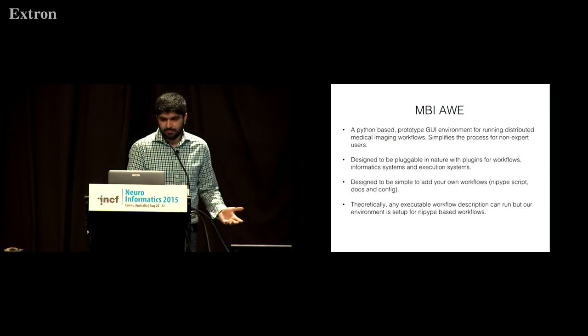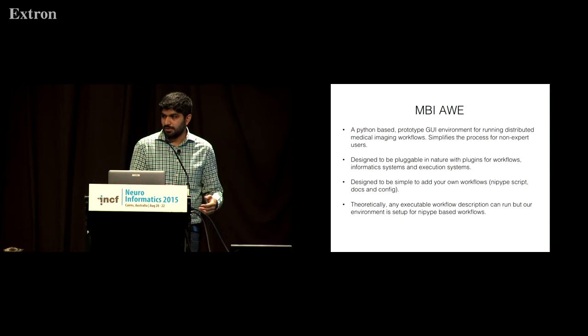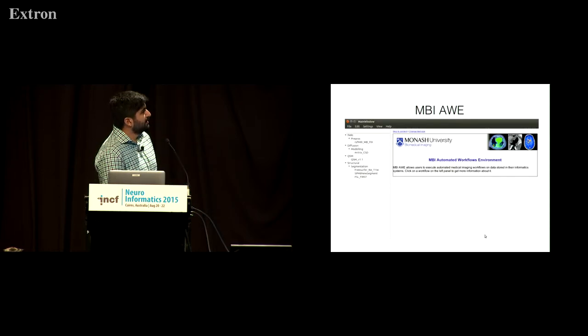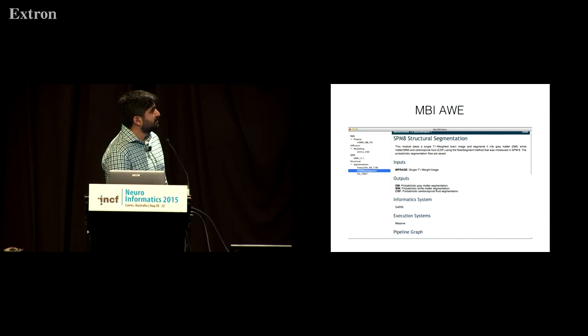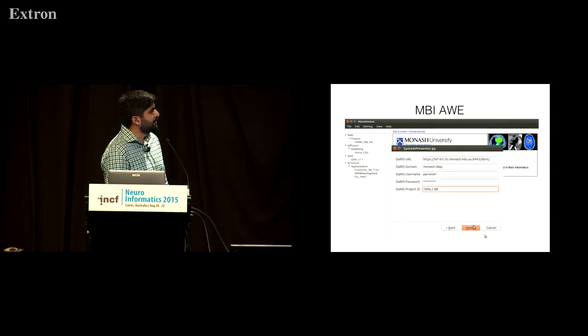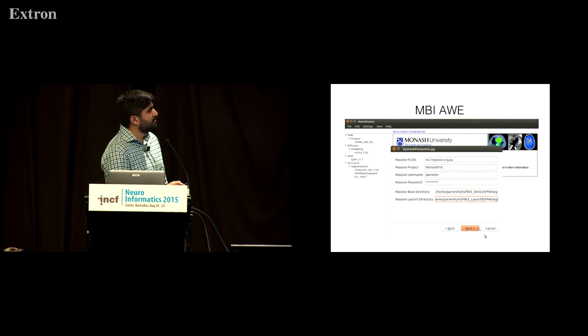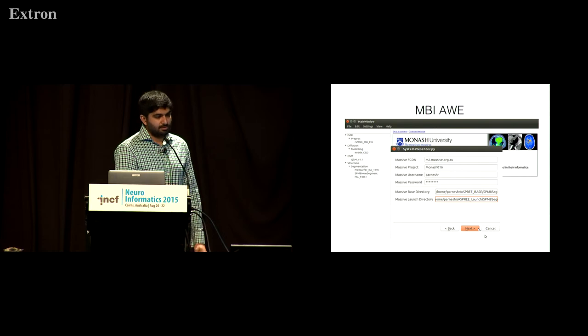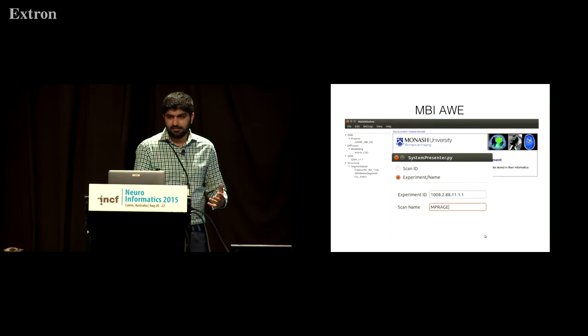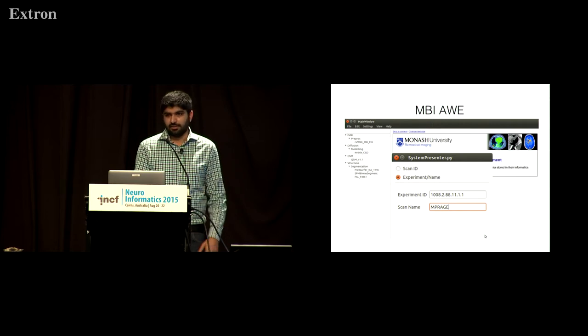So in theory, you could use this for any kind of workflow description. But in our case, we try and use NiPipe as much as possible. It's a great tool, and provides provenance information, which is very useful. So just quickly, I'm going to scroll through a couple of slides showing what the prototype looks like. So you've got all your workflows on the side, you click on one, gives you a brief description, what inputs it expects and outputs, where it can run, the pipeline graph, you can pick your information execution systems, putting some details, and some details of where Massive, which Voitek will talk about a bit later on, is our HPC facility at Monash. So details about accessing your HPC account, and which particular dataset you want to process. And off you go. And then once it's done, you get an email back saying this is completed successfully. Or if there's an error, you get the logs coming back to you.